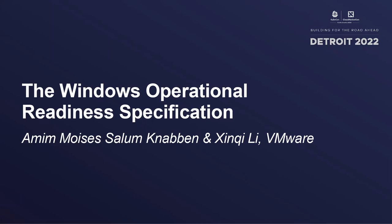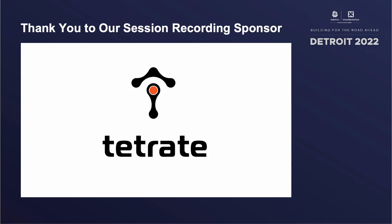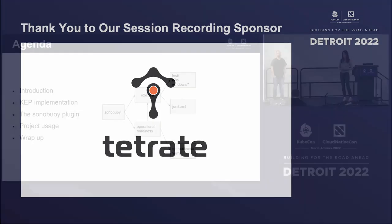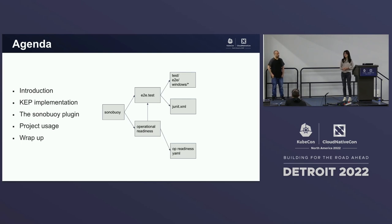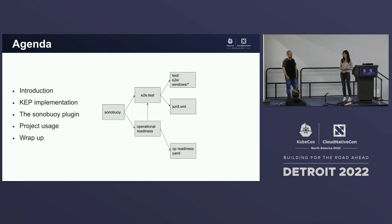Today we're going to start with what conformance testing is, why we need it, and what's the difference between Kubernetes conformance and Windows operational readiness. Then we're going to take a look at the Kubernetes Enhancement Proposal 2578, which defines the Windows operational readiness in detail. There is a corresponding implementation called Windows operational readiness as well. The tool aims to provide a convenient way to run the Windows operational readiness tasks.